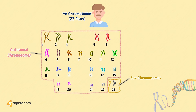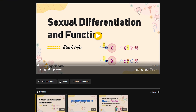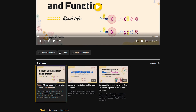It is the sex chromosomes that differentiate males and females. Females contain X and X chromosomes, while males have XY chromosomes, and that is what determines the sex. For more information on this, you can watch the full video on Sexual Differentiation and Function in the physiology videos on scadia.com.